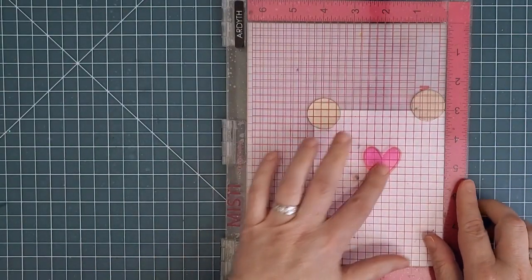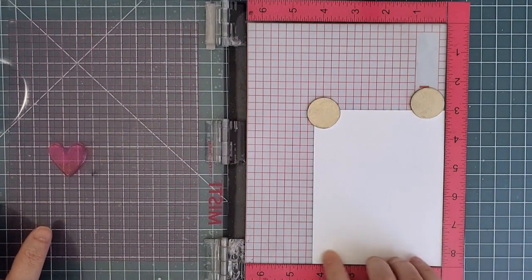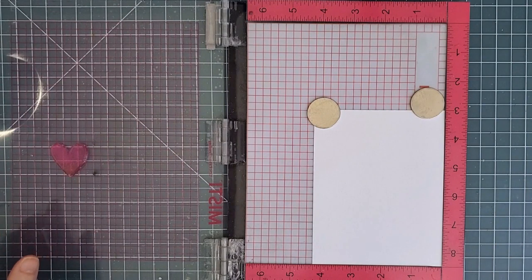I placed the heart stamp in what I call the prime position. This is where I'll put my sentiment, so I find it's helpful to start here and then build my pattern around it.